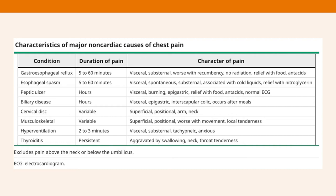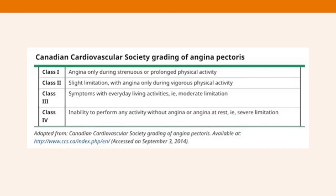Peptic ulcer and biliary disease often have a visceral, burning, epigastric-focused pain and may occur either with food or be relieved by food, with often normal ECGs. Musculoskeletal pain will often form part of the differential diagnosis. It tends to have a variable pattern, is superficial and positional, worse with movement, and has a localized tenderness.